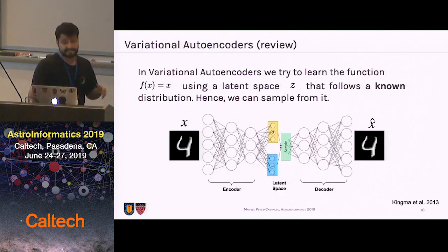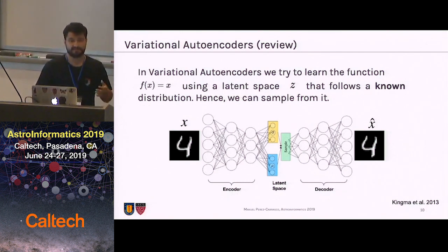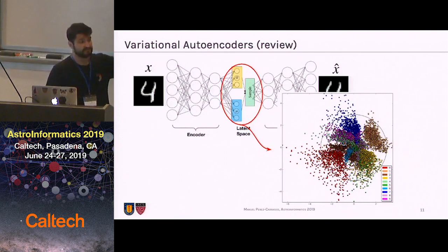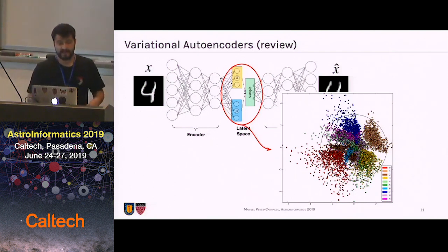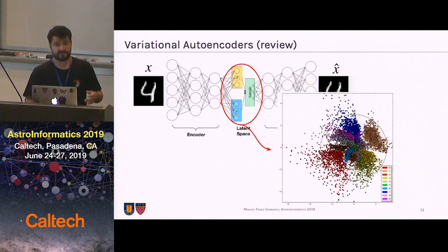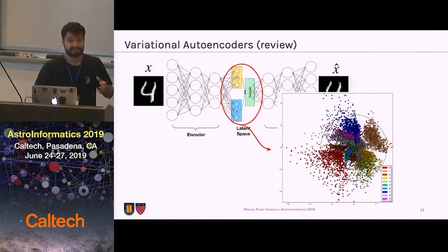In variational auto-encoders, we try to approximate the same function f of x equal x, but now using a latent space that follows a known distribution, so we can sample from it. We usually use statistical measures such as Kullback-Leibler divergence plus a reconstruction term between the input and the output, such as mean-square error. For example, here we can see a latent space of a variational auto-encoder trained on the MNIST dataset using a normal N(0,1) distribution. An important thing to notice is that samples from the same class are nearby each other, because our decoder reconstructs similar data for points that are close in the latent space, and given that objects from the same class are similar in the real space, they should be close in the latent space too.